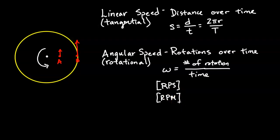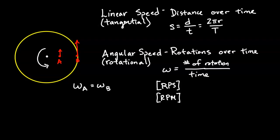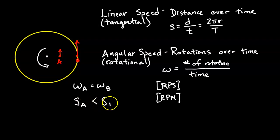There are other units for angular speed such as radians or degrees, but at this level of conceptual physics we'll stick with rpm and rps. Because the number of rotations per time for points A and B are the same, the angular speed of A equals the angular speed of B — for every time A completes a circle on the platform, B also completes a circle. However, the linear speed of A is less than the linear speed of B, because B travels a greater distance over the same amount of time.